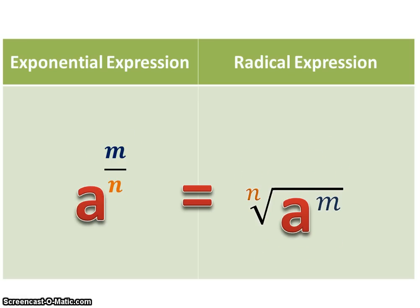This is called radical expression because of the radical sign. a, which is your base, will be called radicand in radical expression. The numerator of exponent will be the power in the radical expression and the denominator of exponent will be the index.